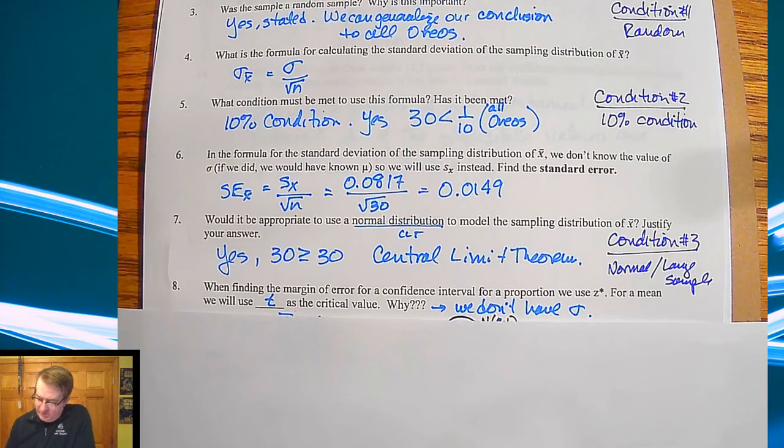Now when we're finding the margin of error for confidence interval we usually use for proportions we use z star. We are going to use t as the critical value. Well what is this t? Well here's why.